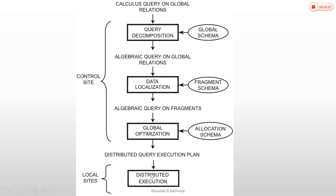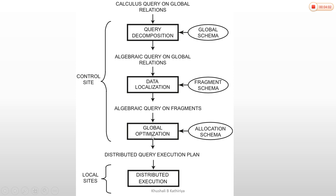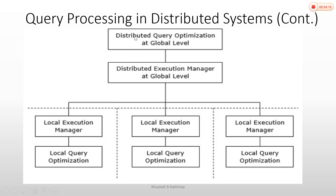Query decomposition involves a parser and translator to convert the query into algebraic form. Data localization uses the catalog to identify relevant fragments and optimizes the fragment queries in relational algebra format. Global optimization then chooses the globally optimal distributed query at the global level.